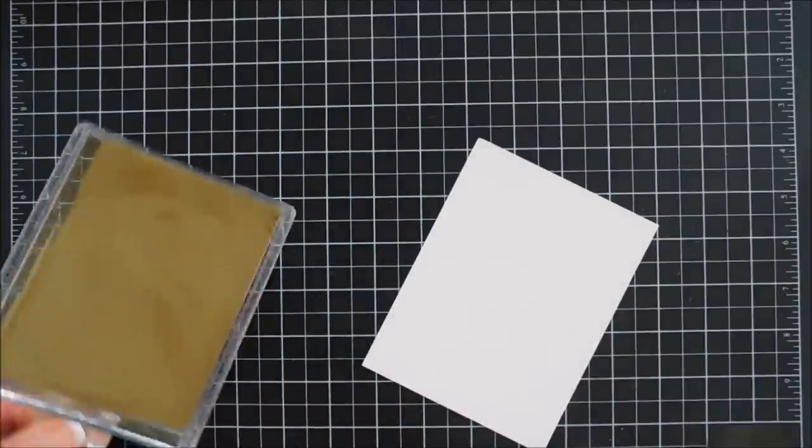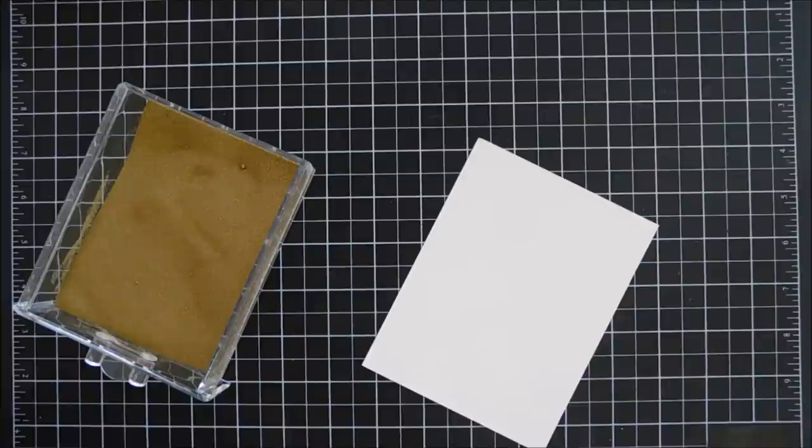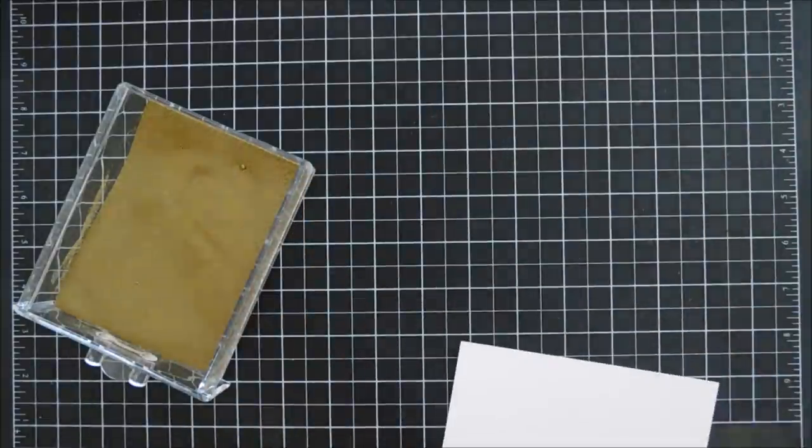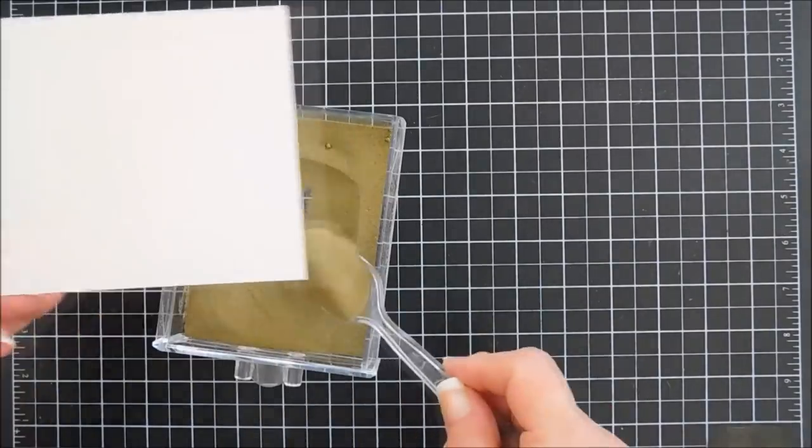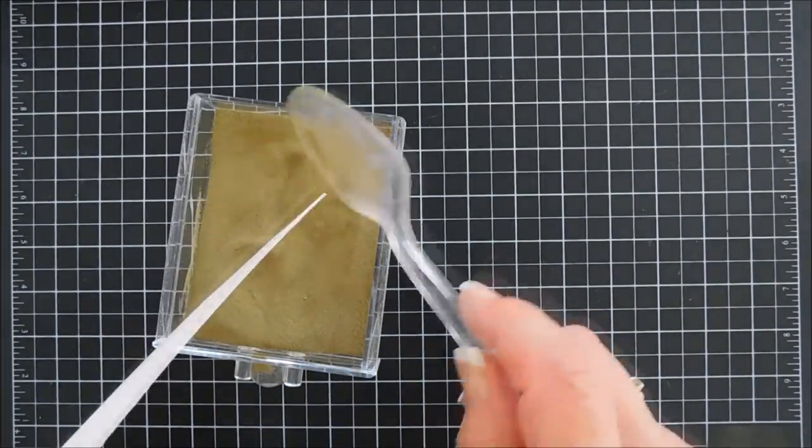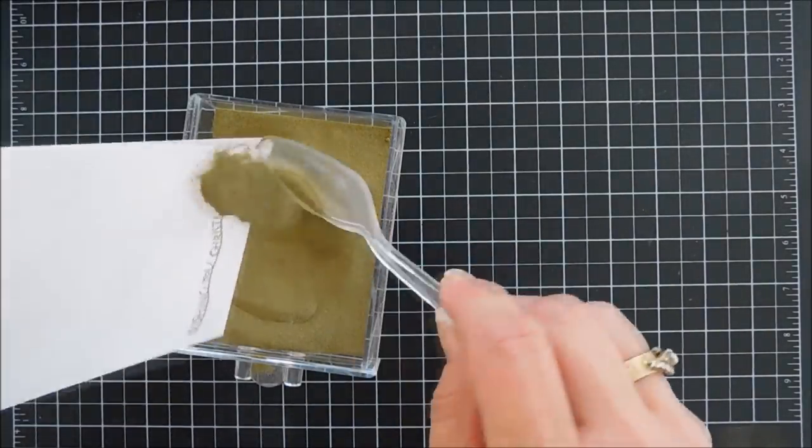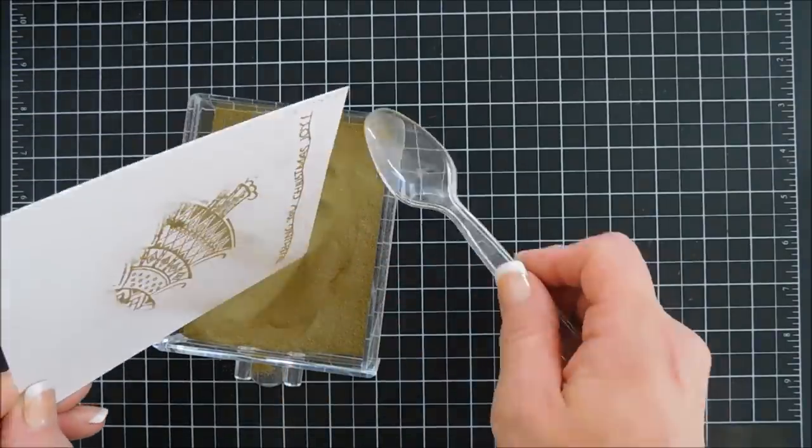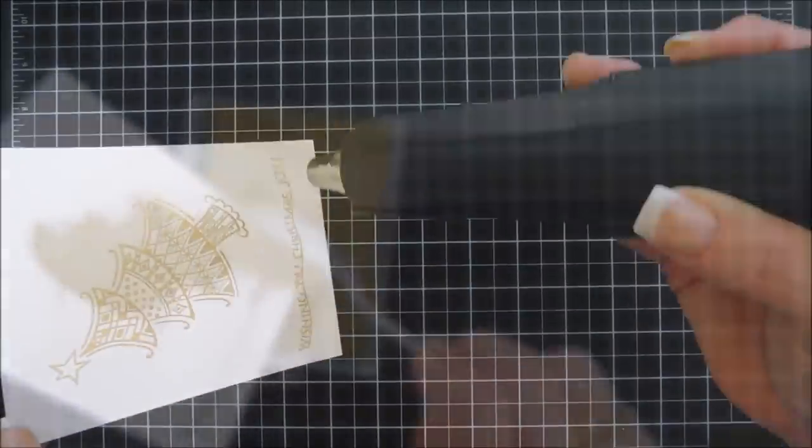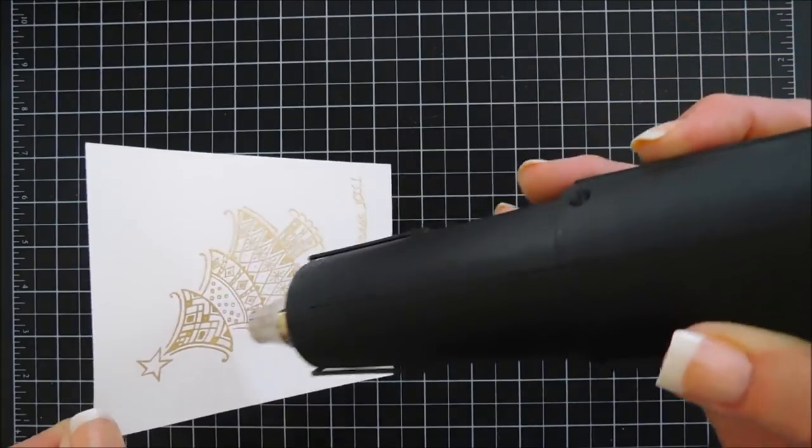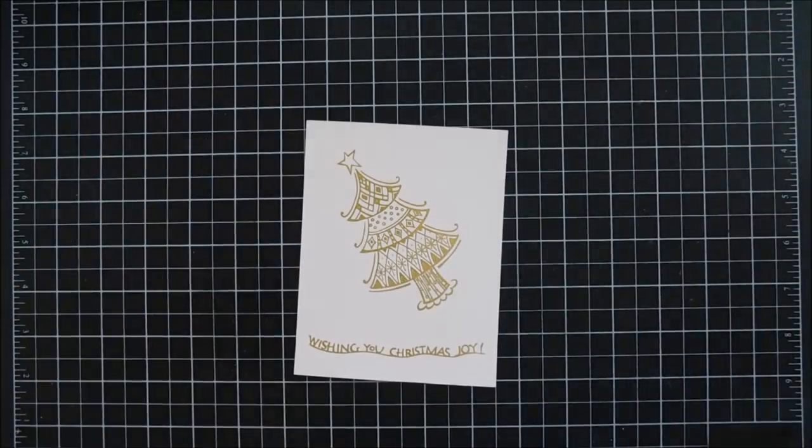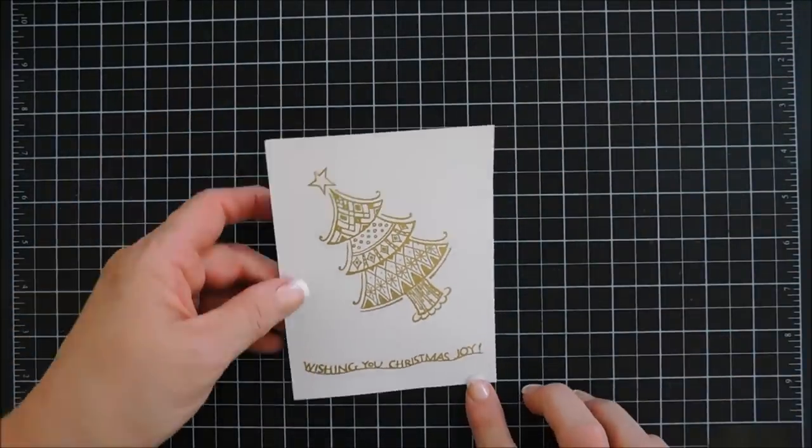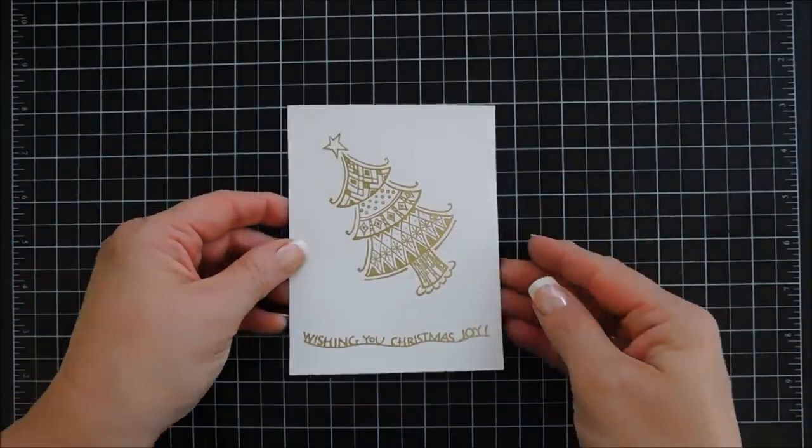Make a good press, and then we're going to take this out of the Misti. We're going to add some gold embossing powder. Just bring in my little drawer here, and also my little spoon, and we'll do a little scooping over our panel. The sentiment will fit the width of your A2 size card, and then the Christmas tree is actually a pretty large size, so it's going to make a great focal point.